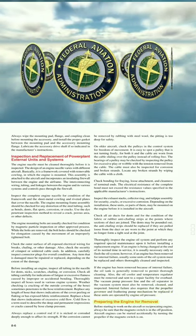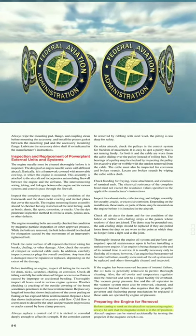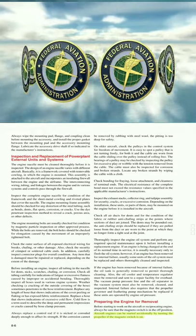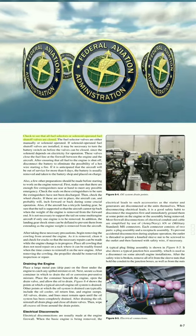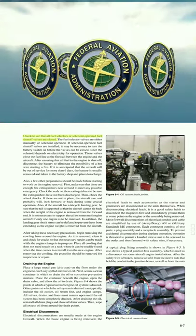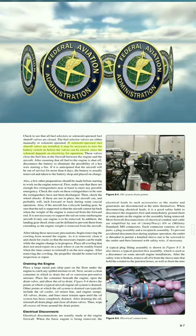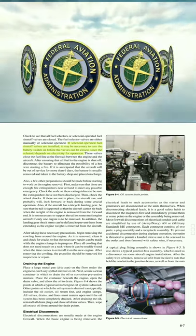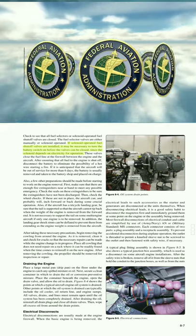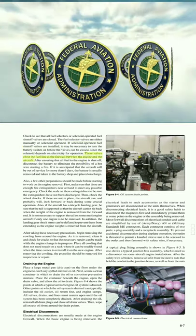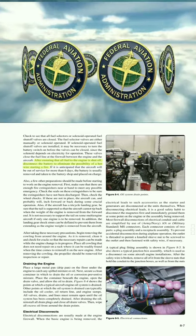Preparing the Engine for Removal: Before starting to work on the aircraft or reciprocating engine, always be sure that the magneto switch is in the OFF position — aircraft engines can be started accidentally by turning the propeller if the magneto switch is on. Check to see that all fuel selectors or solenoid-operated fuel shutoff valves are closed. If solenoid-operated fuel shutoff valves are installed, it may be necessary to turn the battery switch on before the valves can be closed. After ensuring all fuel to the engine is shut off, disconnect the battery to eliminate the possibility of a hot wire starting a fire.